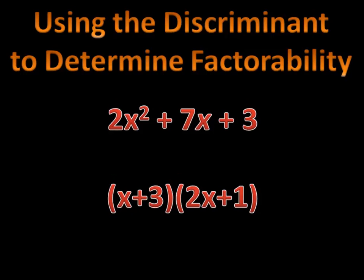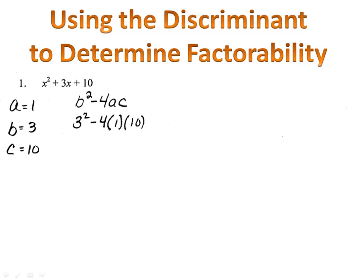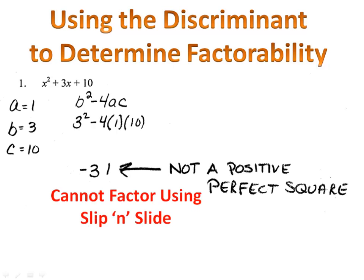Now let's take a look at a couple of examples together to work through this process. We want to know if the expression x squared plus 3x plus 10 can be factored using slip and slide. First, is there a greatest common factor? No. Now, can we use slip and slide? We identify a is 1, b is 3, c is 10, and plug them into the formula b squared minus 4ac. That's 3 squared minus 4 times 1 times 10, and we end up with negative 31. Negative 31 is not a positive perfect square, so we cannot use slip and slide to factor this expression.